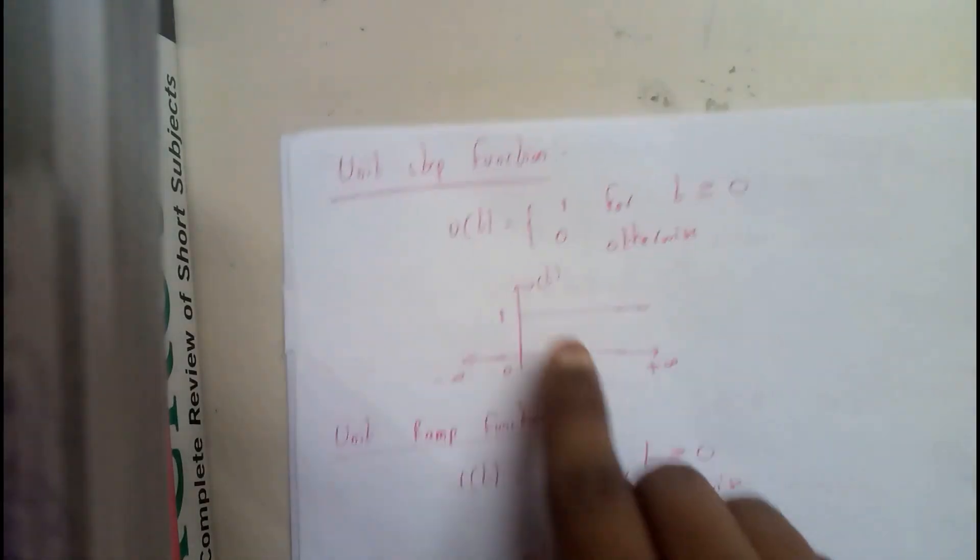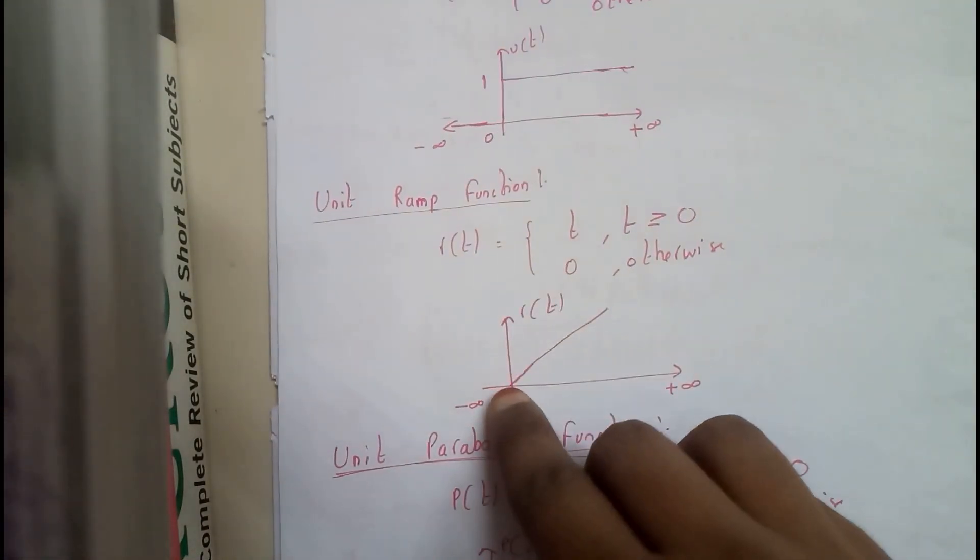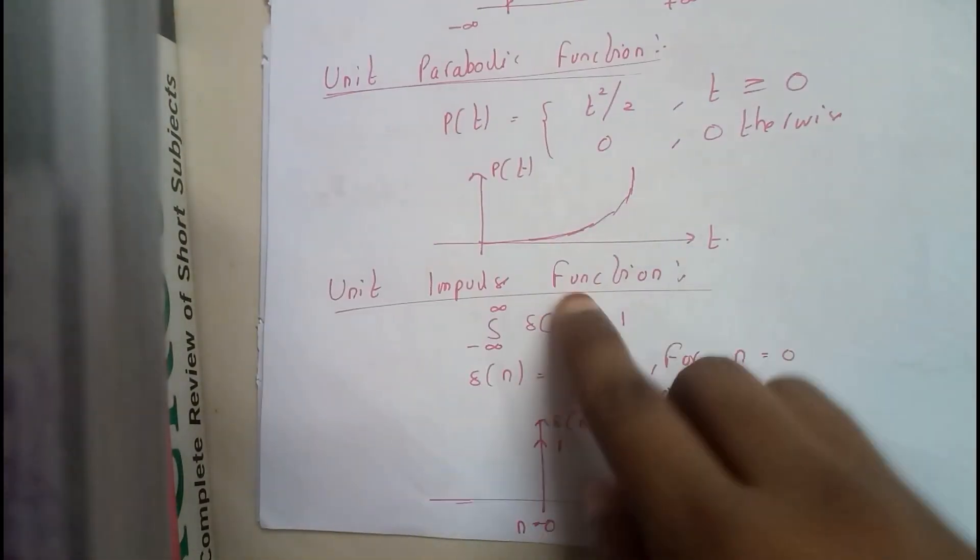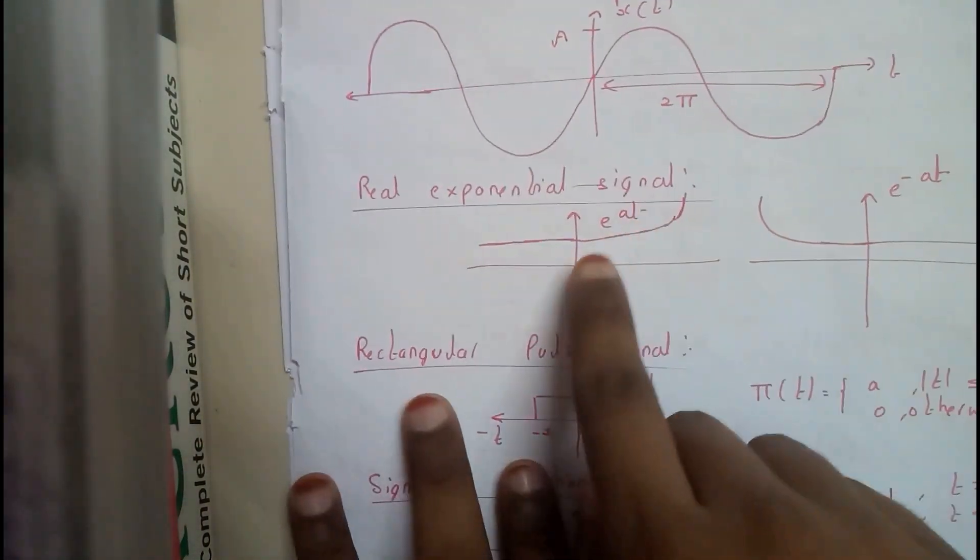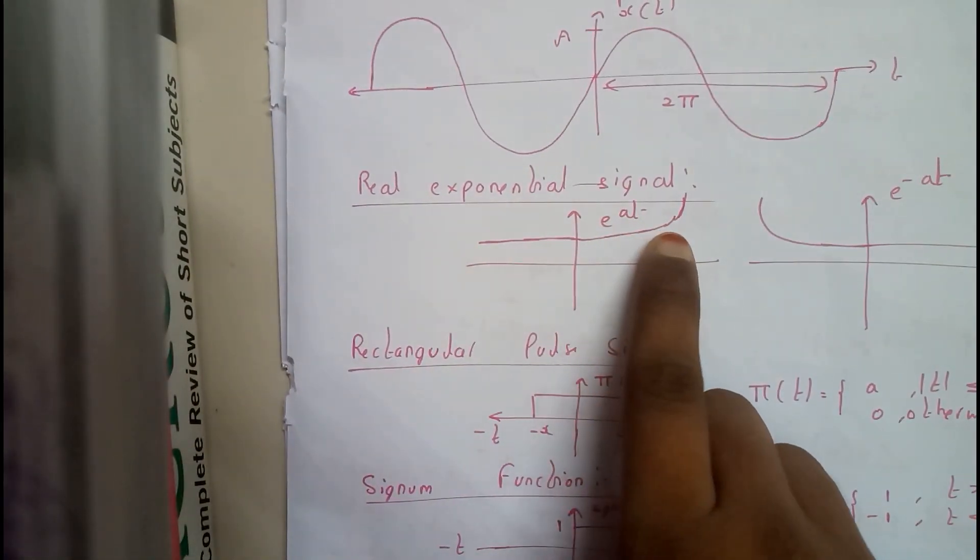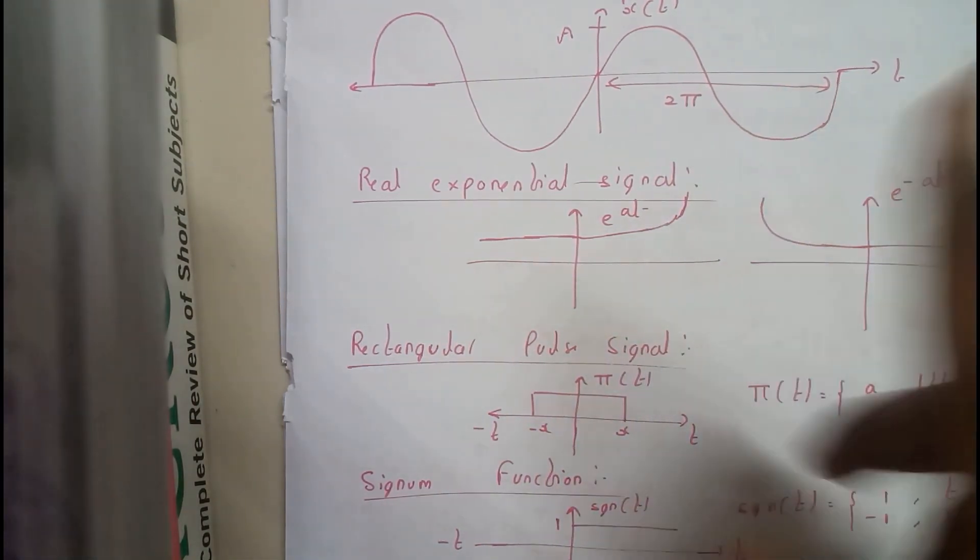Unit step function exists from 0 to infinity with value 1. Ramp function will be like this, parabola in the shape of parabola, impulse function at 0 equals 1, sinusoidal function in terms of sine. Real exponential function: if e power aθ it increments, if e power minus aθ it decrements.